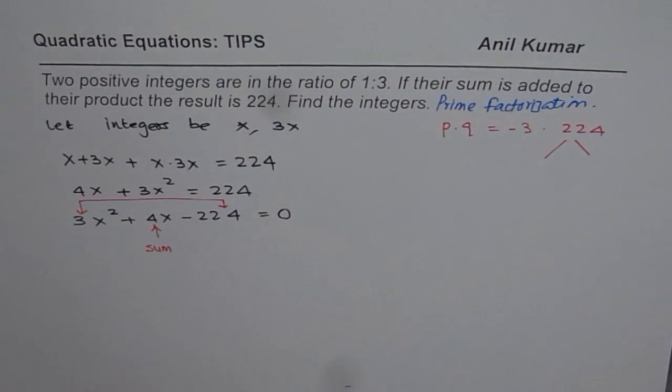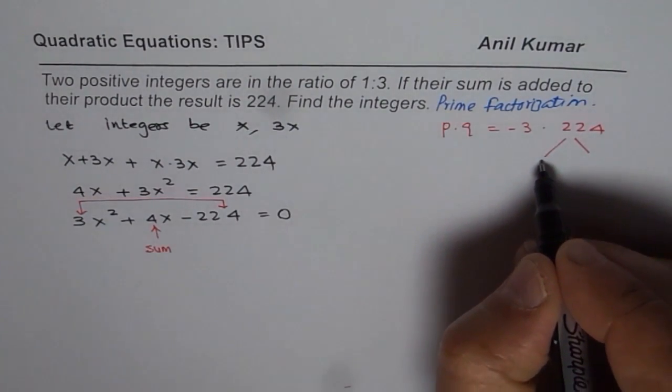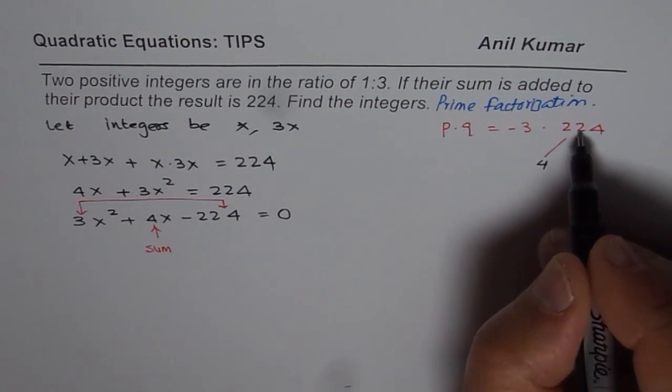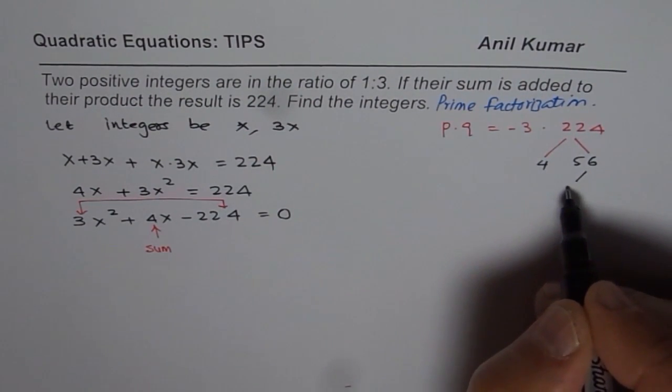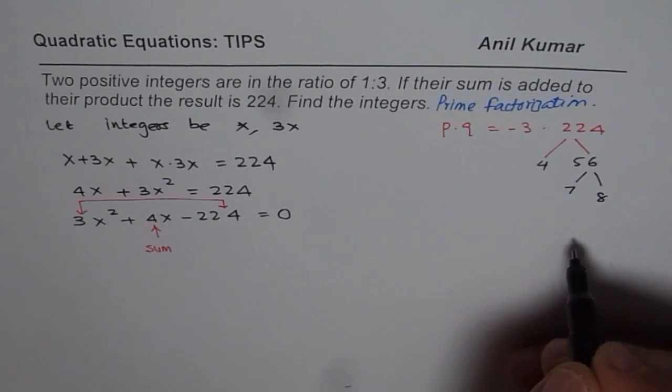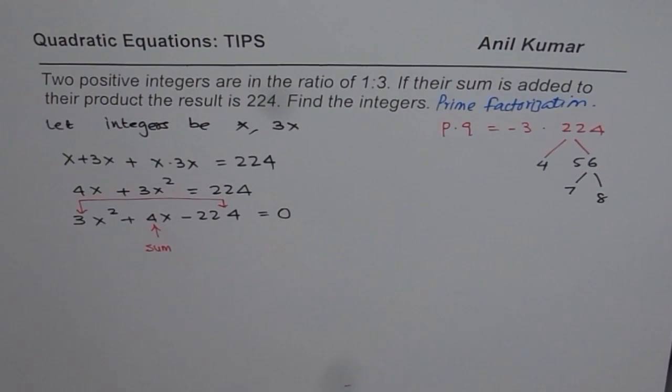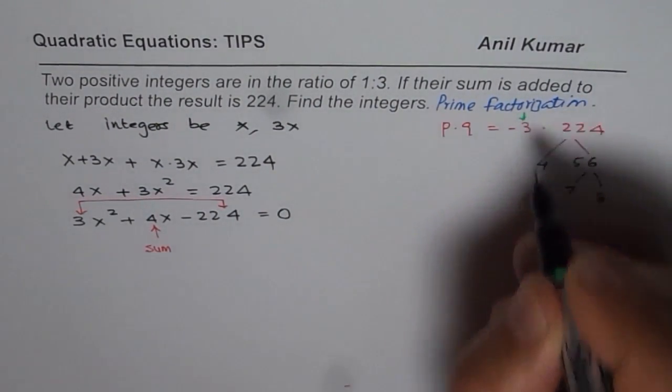Now 224. So we could divide 24 by, let us say 4. Let us begin by dividing by 4. So 4 times 56 is 224. 56, we know is 7 times 8 is 56. So now we get these three factors. 3 is also a factor, which is a prime factor. Now these are the factors for us.